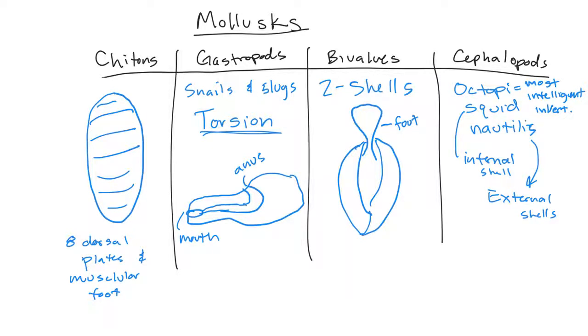Cephalopods, these are octopi, squid, and nautilus. The octopi do not have a shell. The squid has an internal shell. The nautilus has an external shell. And this group, all of them can squirt ink as a defense mechanism. Octopi are also the most intelligent invertebrate. They can unscrew things. They have a number of defense mechanisms they can use like coconut shells to hide. They have camouflage, lots of other cool things.